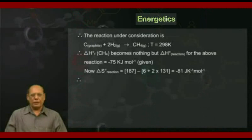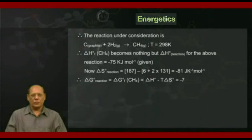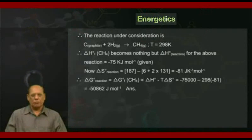Since ΔS° of the above reaction is ΔS°f for methane, and ΔG°f = ΔH° - TΔS°, substituting the values of ΔH°, T, and ΔS°, we get -75,000 - 298×(-81) = -50,862 J/mol. That becomes the standard free energy of formation of methane, and that is the answer to this question.